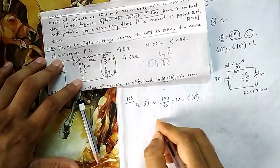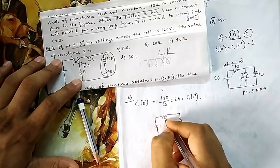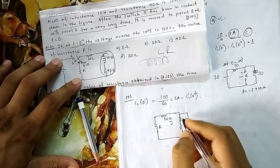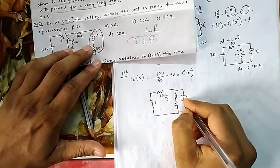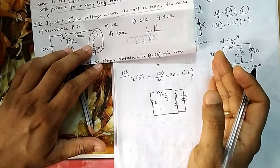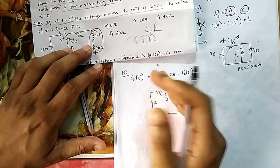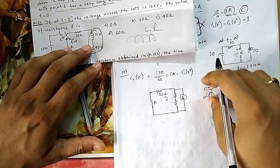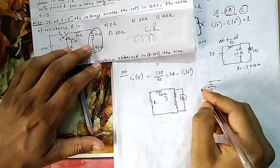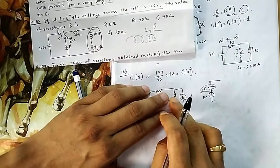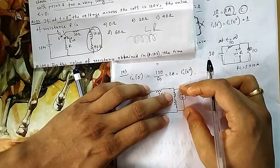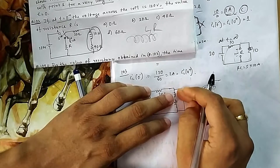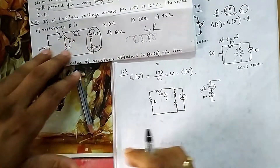Therefore i_L(0+) = 2 A also. For the t = 0+ circuit, any initial current in an inductor is represented as a parallel current source. Similarly, any initial voltage on a capacitor is represented as a series voltage source. The ideal inductor with no initial condition acts as an open circuit at t = 0+, so the 2 A initial current source drives the circuit.